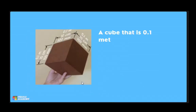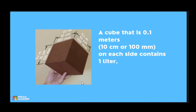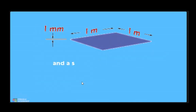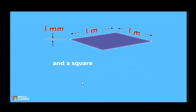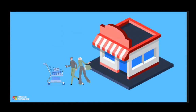Alam nyo ba, ang cube na may 0.1 meters, o kaya naman 10 cm or 100 mm, ang nasa loob nyan ay nagko-contain ng isang litro? And a square meter that is 1 mm thick also contains 1 liter. The next time pag pumunta ka ng store, take a minute and look on the labels to see how many liters or milliliters are in each container.